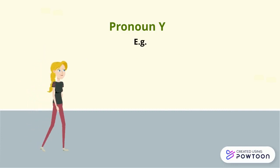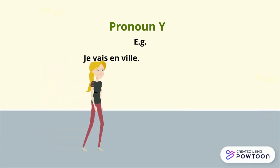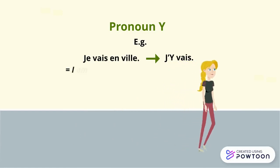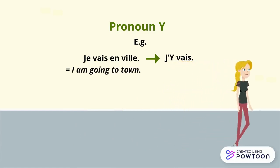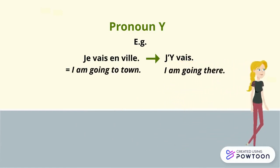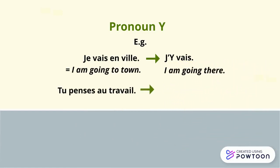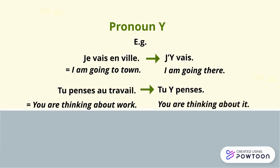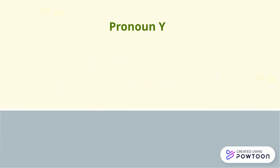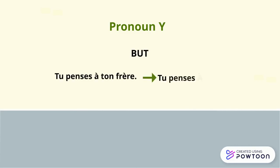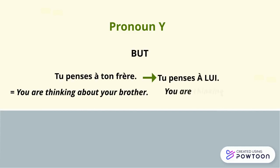For instance: je vais en ville — j'y vais. I'm going to town — I'm going there. Tu penses au travail — tu y penses. You are thinking about work — you are thinking about it. But: tu penses à ton frère — tu penses à lui. You are thinking about your brother — you are thinking about him.